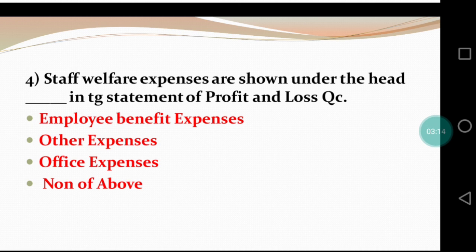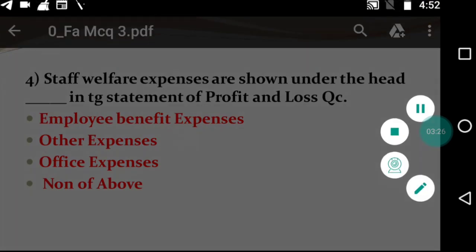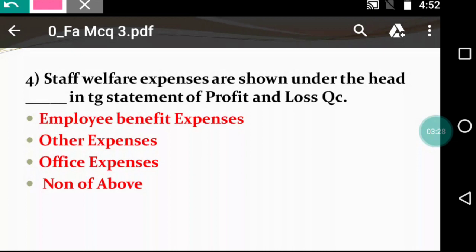Question 4: Staff welfare expenses are shown under the head — dash. The options are: employee benefit expenses, other expenses, office expenses, and none of the above. Staff welfare expenses relate to staff, which is considered employee benefit expenses. So the right answer is employee benefit expenses.